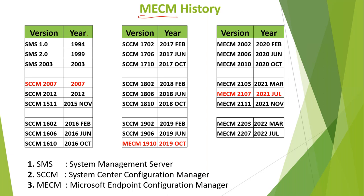Microsoft developed and released this product in the market in 1994 as SMS — System Management Server. It started in 1994 as SMS 1.0, then SMS 2.0 in 1999, then SMS 2003. Then Microsoft changed the name from SMS to SCCM — System Center Configuration Manager — in 2007. So we had SCCM 2007, SCCM 2012, SCCM 1511, and multiple versions through 2016, 2017, and 2018.